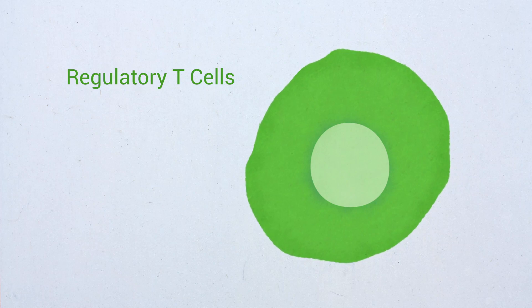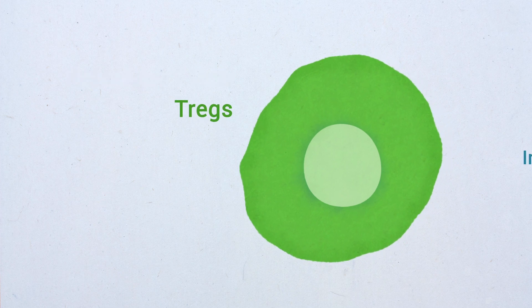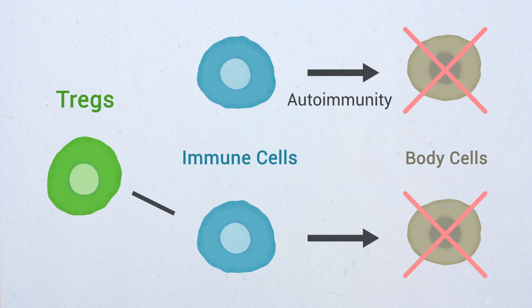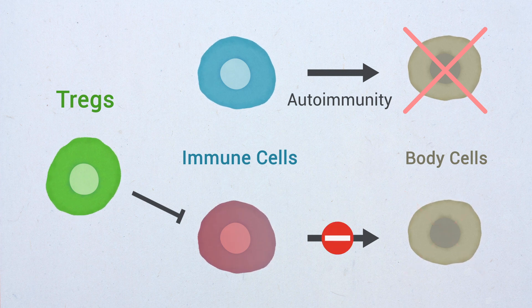Immune cells called regulatory T cells, or Tregs, prevent the immune system from attacking the body's own cells, a phenomenon known as autoimmunity.